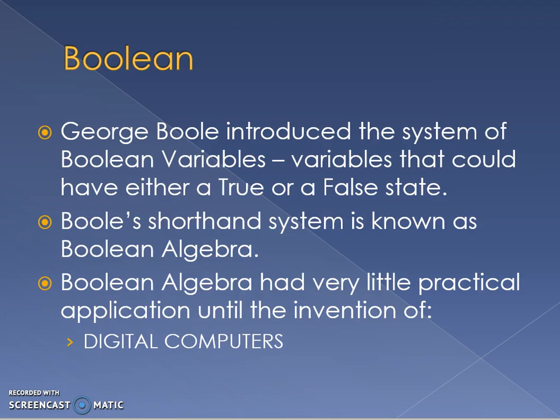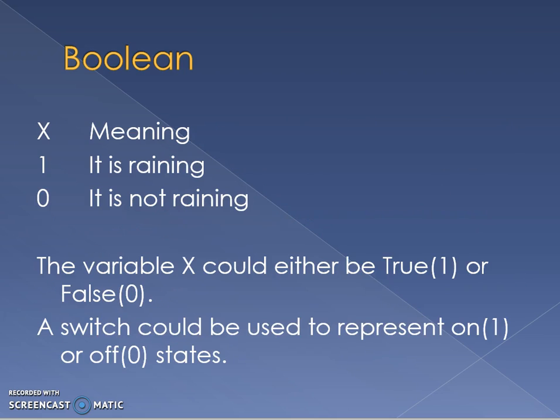So George Boole introduced a system of Boolean variables, zeros and ones, true and false. He created a shorthand system which was known as Boolean algebra and this was used to represent logic circuits. Now Boolean algebra was actually created before digital computers. So until digital computers were around it didn't have any practical application. So he came up with a concept of true or false summarized as one or zero. So true could be represented as a one, false could be represented as a zero.